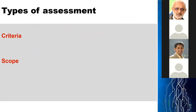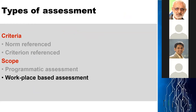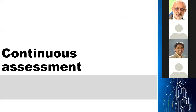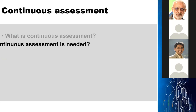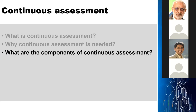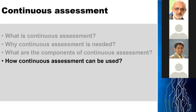Other types of assessment, based on criteria, include norm-referenced and criterion-referenced. Based on scope, there is programmatic assessment, workplace-based assessment, and 360-degree assessment. Regarding continuous assessment, we will address four important questions: What is continuous assessment? Why is continuous assessment needed? What are the components of continuous assessment? And how can continuous assessment be used?